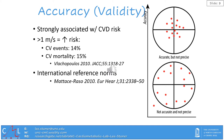Pulse wave velocity is very strongly associated with cardiovascular disease risk. One meta-analysis reported that for each one meter per second increase in pulse wave velocity, the risk of cardiovascular events increases by 14%, and the risk of cardiovascular mortality increases by 15%. Also of great value is that international reference norms are available — that is, we know what a pulse wave velocity should be for a given age of an individual.